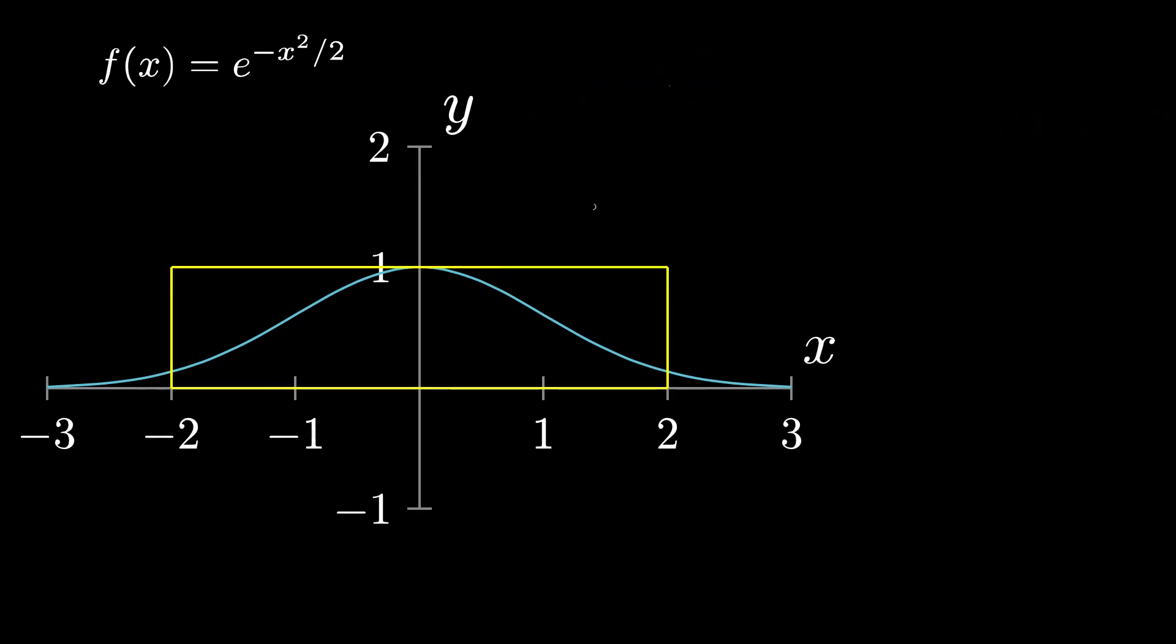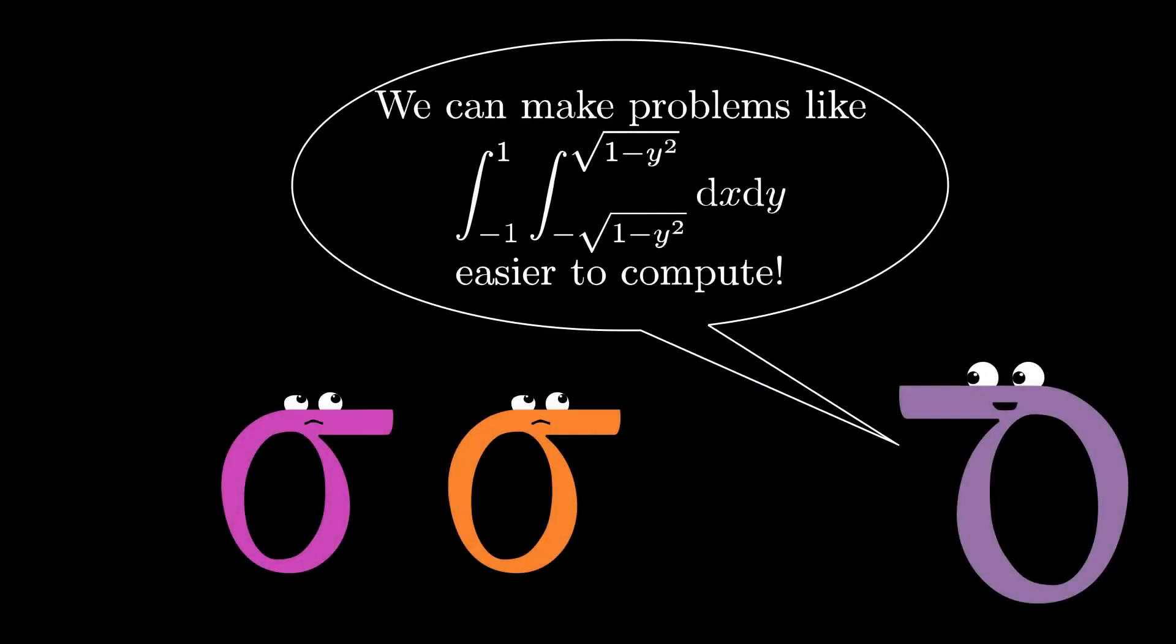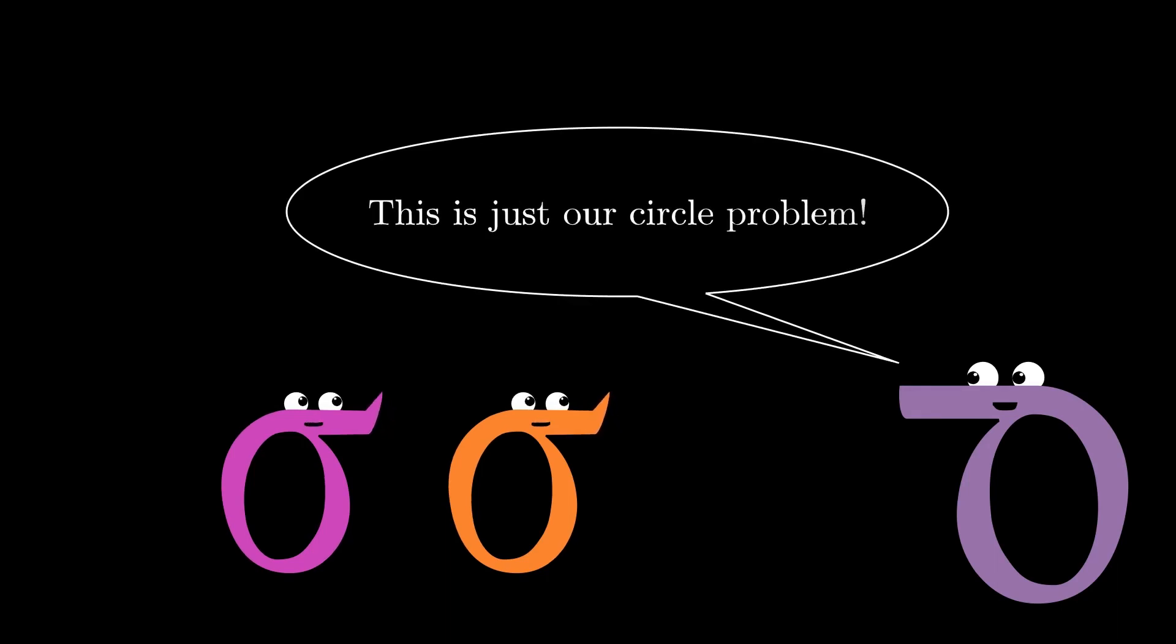So what we're finding here is the integral from negative 2 to 2 of our function. And it makes problems that look like this a lot easier to compute. And I know this doesn't look simple. But in fact, this is just our circle problem re-expressed in terms of calculus. So thank you so much for watching. And I hope you enjoyed this video. And I see you again soon.